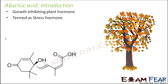Abscisic acid is also known as stress hormone. Why stress hormone? Because it does a lot of things which actually stop the growth in a plant. When so many things are done to stop growth, it will obviously create stress, and that is why it is called the stress hormone.